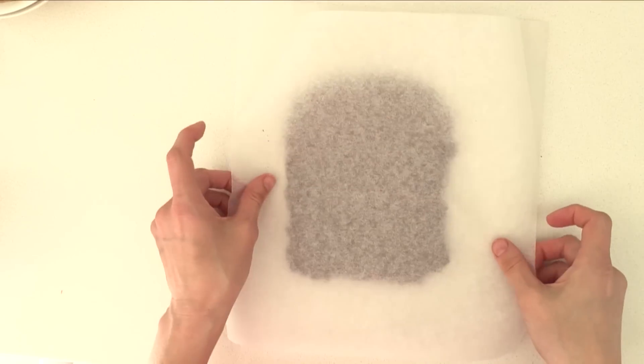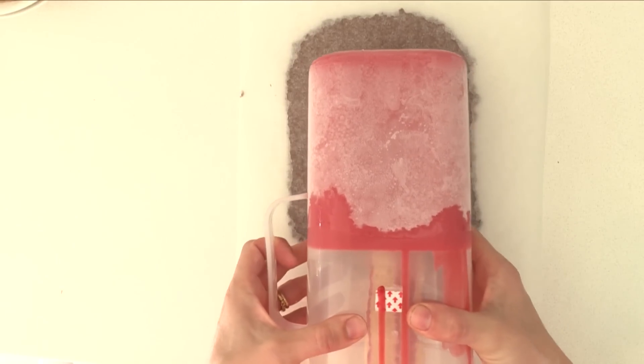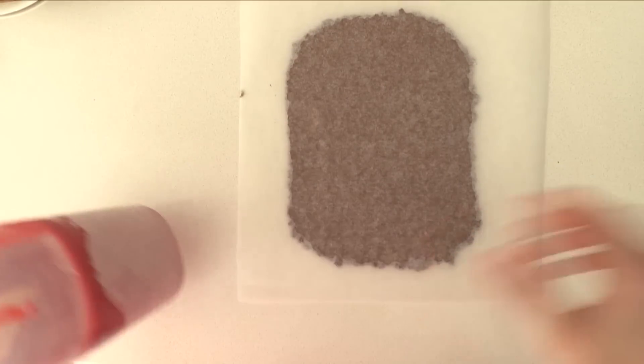And then top it with another sheet of baking paper and use a rolling pin to make sure it's really smooth and flat. Check your dessert will fit on top and then place it in the fridge to set.